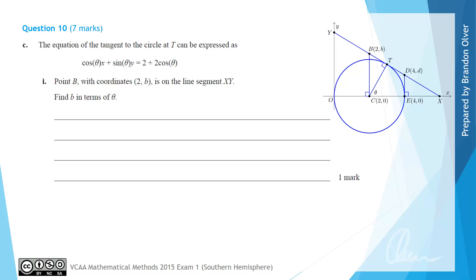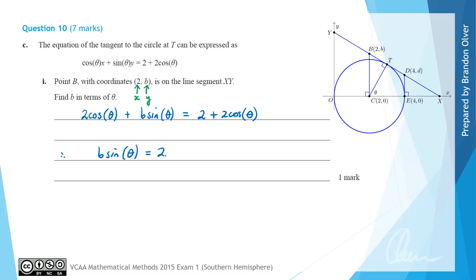For part C, the equation of the tangent to the circle at T is given as cos(θ)x + sin(θ)y = 2 + 2cos(θ). For part one of part C, the point B with coordinates (2, b) is on the line segment XY, and we need to find b in terms of theta. Substituting x = 2 and y = b into the tangent equation gives 2cos(θ) + b·sin(θ) = 2 + 2cos(θ). Subtracting 2cos(θ) from both sides gives b·sin(θ) = 2, so b = 2 divided by sin(θ).